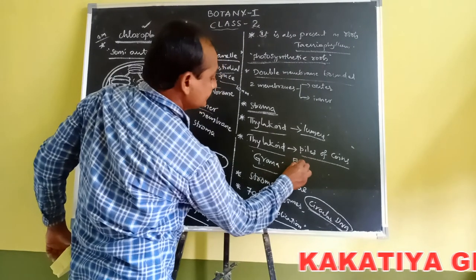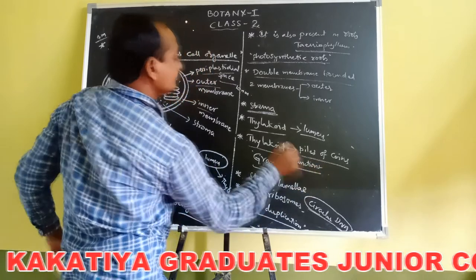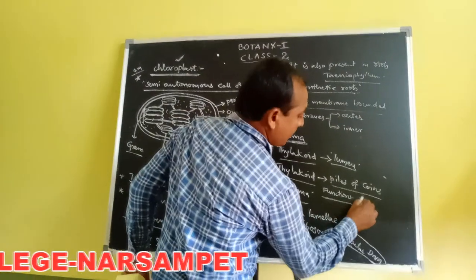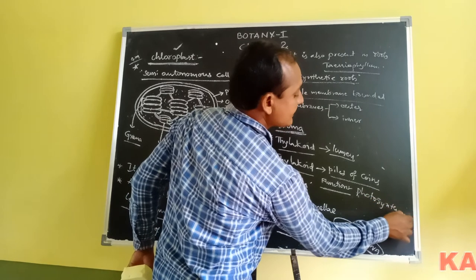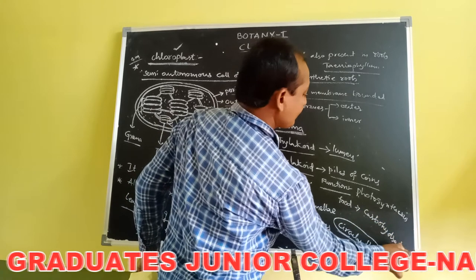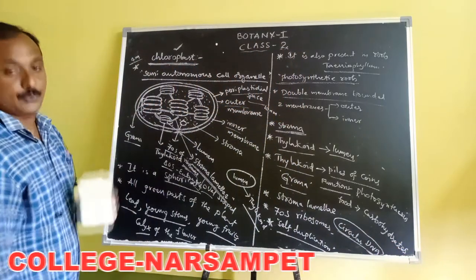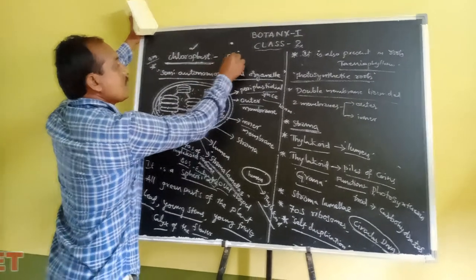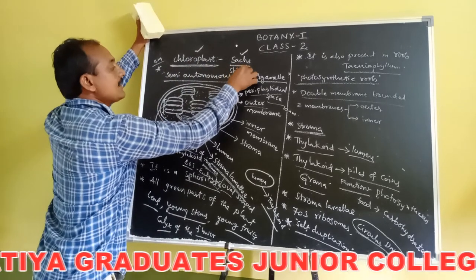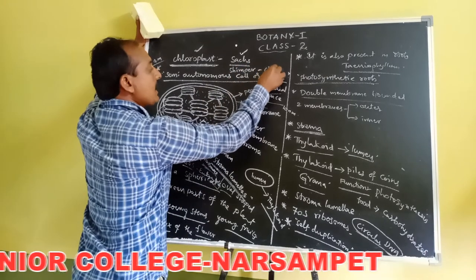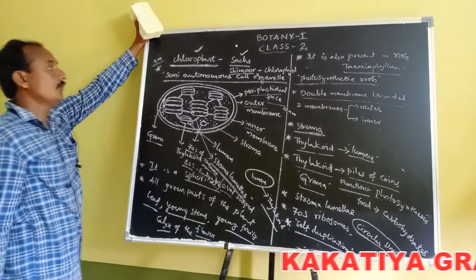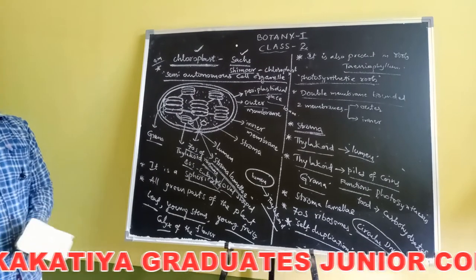The function of the chloroplast is to perform photosynthesis and prepare food material in the form of carbohydrates. Chloroplast was discovered by Sacks, and the name chloroplast was coined by the scientist Schimper.